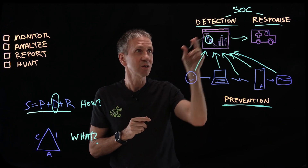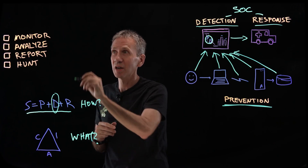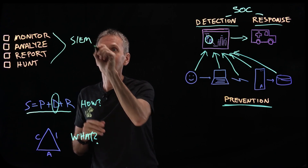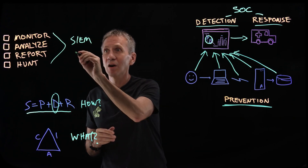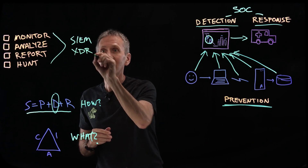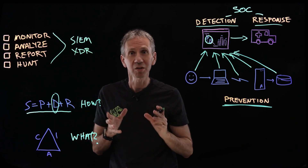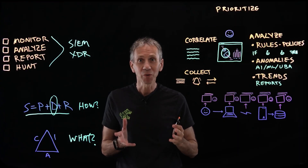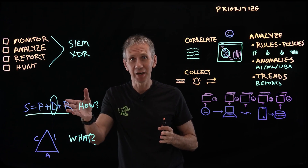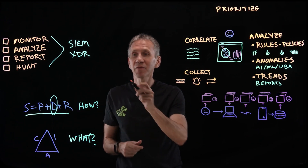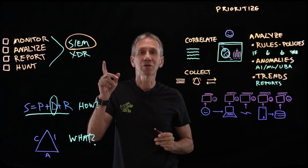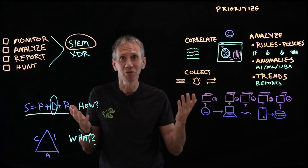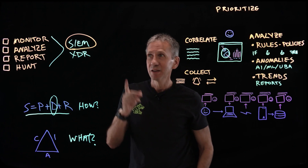What are the technologies the SOC uses for this kind of detection work? There are basically two predominant things: a Security Information and Event Management system — SIEM — and an XDR, an Extended Detection and Response system. We're going to take a look at both of those. Now let's go deeper into the SIEM specifically.